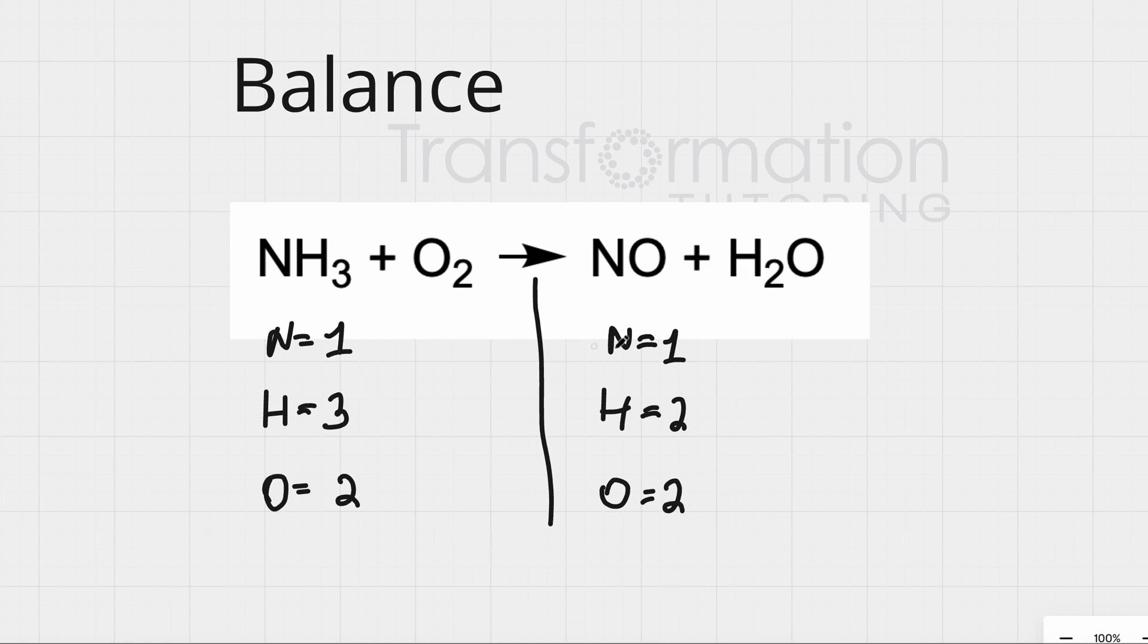Now let's look whether everything is equal or not. Nitrogen so far is equal, so it is good to go. Hydrogen is not. There are 3 hydrogens on the left and 2 hydrogens on the right. What can we do?